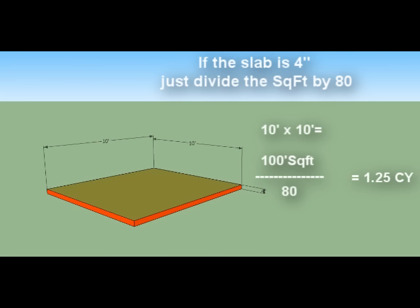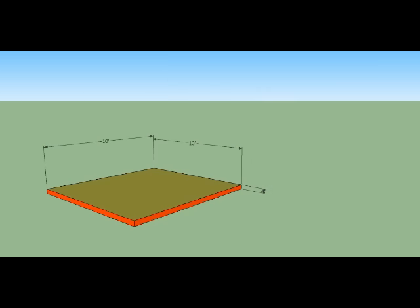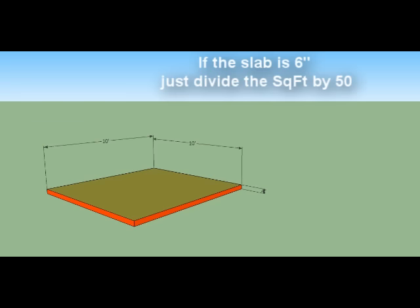Let's say your slab is six inches instead of four inches. The constant changes, so for a 10 by 10 slab — which still gives you 100 square feet — you divide by 50 instead. That gives you approximately two cubic yards.